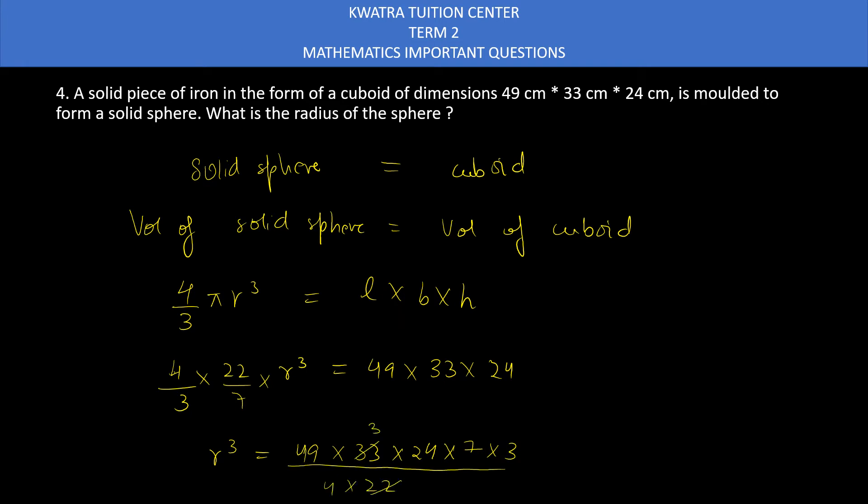22 and 33 can be cancelled, gives you 3 and 2. Then 2 and 24 cancelled gives 12. 4 is there, 4 and 12 cancelled gives 3. Now simplify. You have 49, which is 7 squared, and one more 7 is there. I have 3 threes, so I'll put 3 to the power 3. We have 1 down. 7 cube is there, then 3 cube is there. Take 7 and 3 inside bracket and put cube outside. You have r cube equals 21 cube. Cube and cube cancel. r equals 21 cm. This will be the radius of the sphere.